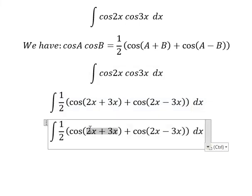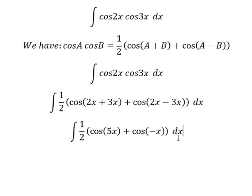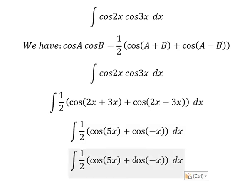This one we have 5x, this one we have negative x. Cosine of negative x, we still have cosine x.